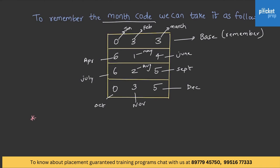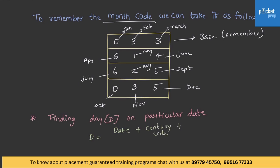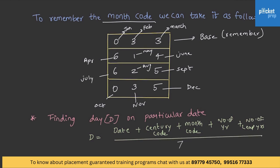To find the day of a particular given date, use the following formula. Day (D) = (Date + Century Code + Month Code + Number of Years + Number of Leap Years) divided by 7. For example, if your friend asks the day of your birth date, you can easily find it using this formula without searching previous calendars.